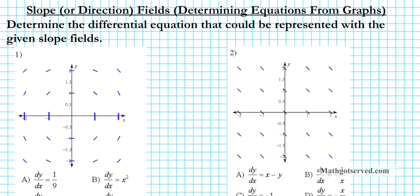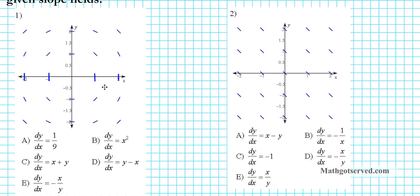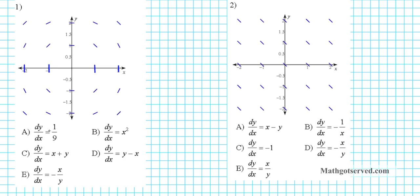For number 1, we have this circular slope field and the question is which of these differential equations results in this slope field. The whole idea behind a slope field is that a differential equation — when solved — gives you a family of curves, and the slope field tells you the slope of the tangent line at each point on those solution curves. We have to find the initial value to associate this slope field to a particular solution.